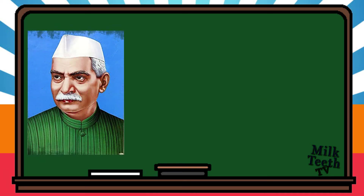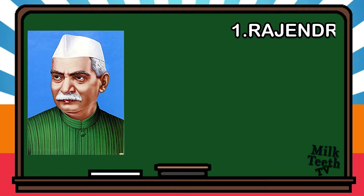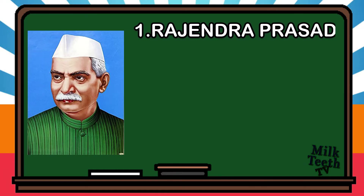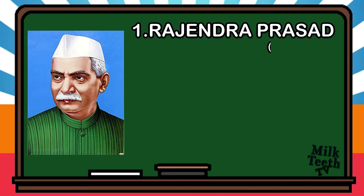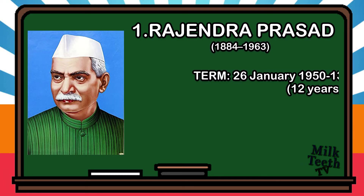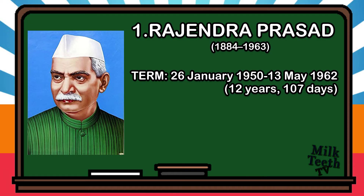First President of India: Rajendra Prasad. He was an Indian independence activist, scholar, and lawyer, and also the first president of India. His term began on 26th January 1950 and lasted till 13th May 1962, for 12 years and 107 days.